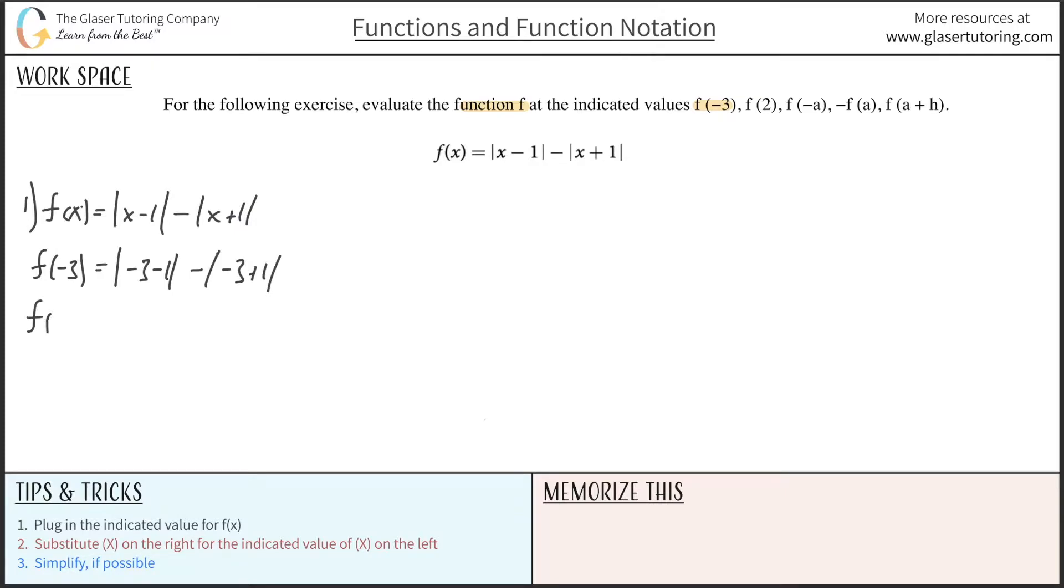Evaluate the, or simplify now, the absolute values first. So this is absolute value of negative 4 minus absolute value of negative 2. And just continuing on down here, this would be 4, and that's a minus 2. So this f of negative 3 is simply a value of 2. And that takes care of the first one.